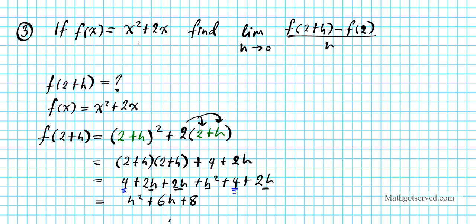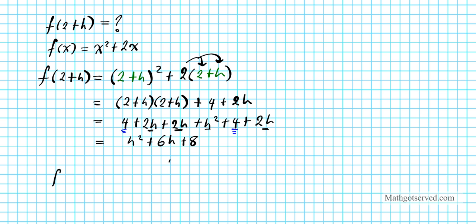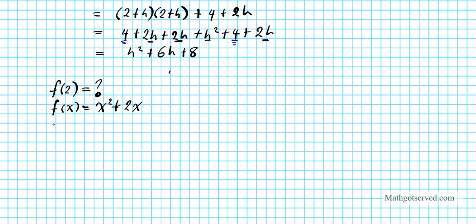So f of 2 plus h equals h squared plus 6h plus 8. Now I want to find f of 2. We're going to plug 2 into the function f of x, which equals x squared plus 2x. So we're going to have f of 2 equals 2 squared plus 2 times 2. Following the order of operations, 2 squared is 4, and 4 plus 4 equals 8.